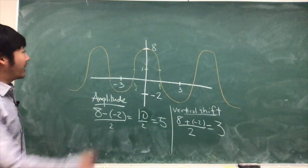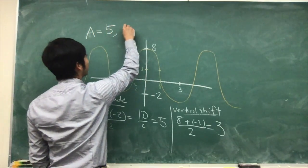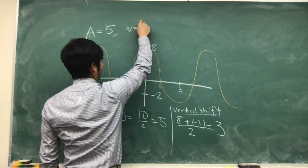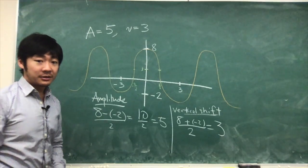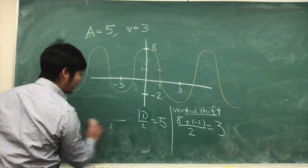So now we have our amplitude is 5 and our vertical shift is 3. Now we need to figure out what the period is.